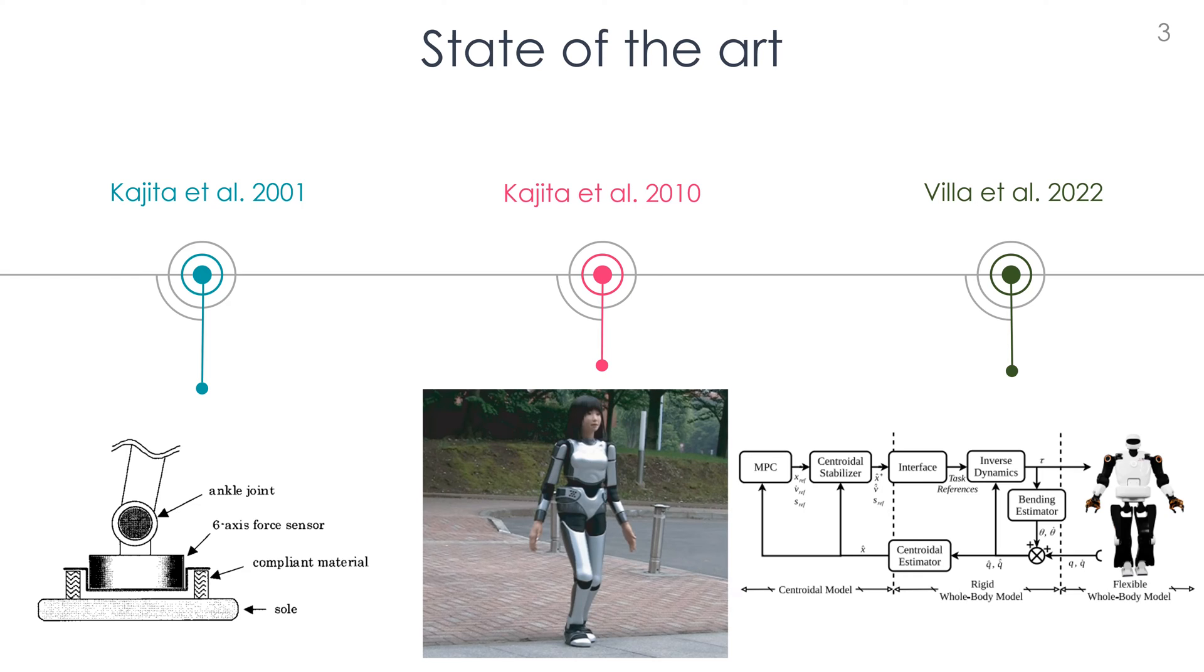Finally, Villa, in Humanoids 2022, presented a control strategy that considers the flexibility in the cross-section between the root link and the hip of the Talos robot.